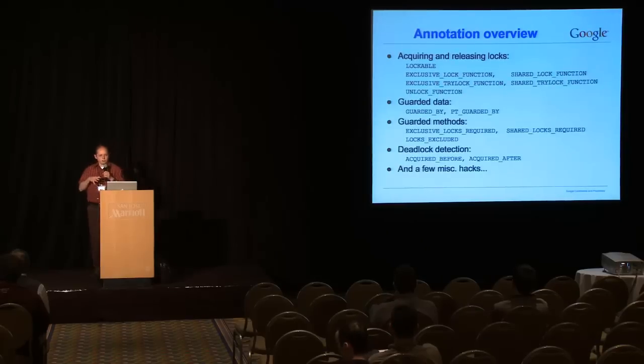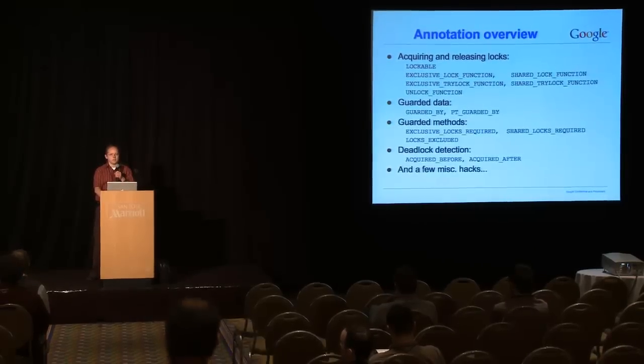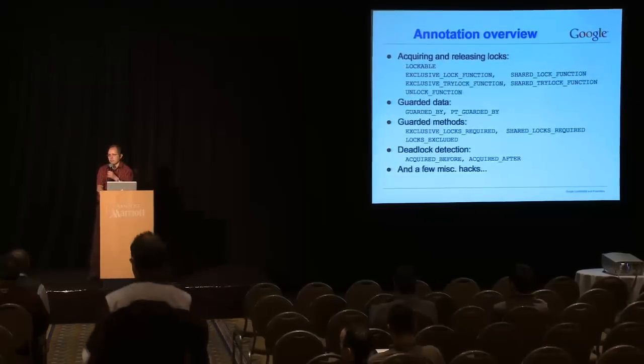So, there's a good reference on the relationship between this and type checking, which is type-based race detection for Java. Very similar system there. Okay. So, here are all the annotations that we support. Or at least most of them. We have a set of annotations for acquiring and releasing locks. And we have a set of annotations for guarding data and guarding methods. And we have some annotations for deadlocks as well. And we also have a few extra ones that are kind of miscellaneous hacks that I'm not going to cover in this talk.